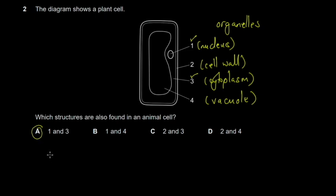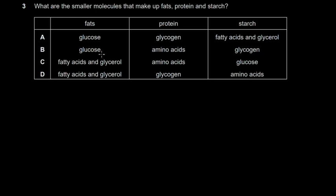Question three asks: what are the smaller molecules that make up fats, protein, and starch? For fats, it's not glucose, so we eliminate that. For protein, it's amino acids — not glycogen. For starch, it's obviously glucose. Cambridge questions sometimes help you out by giving clues: if you got one right, you can use that to check the others. Tick the correct box and continue.